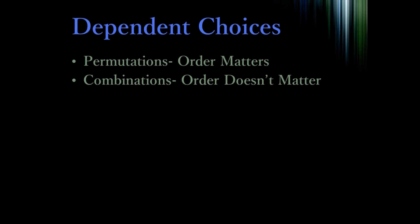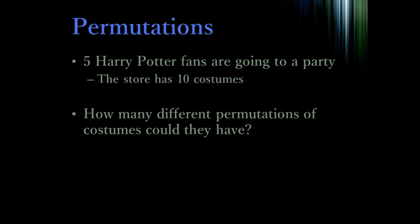These are situations where the choices you make at the beginning affect what options you have later on. There are two categories that we can consider: permutations, where the order of the choices matters, and combinations, where the order of the choices does not matter. Let's say you had five Harry Potter fans that are going to a party, and they go to a store that has ten costumes. Since each person is going to have a costume, how many different arrangements of the costumes to the people can we make? That is, if Alice is dressed up as Harry Potter, that's different than if Bob is dressed up as Harry Potter.